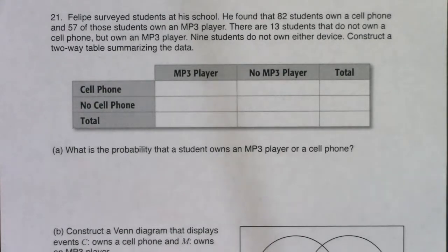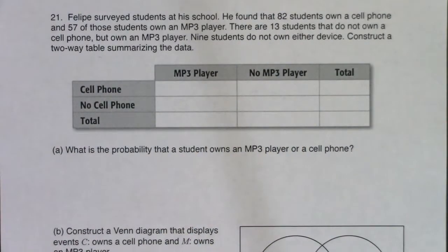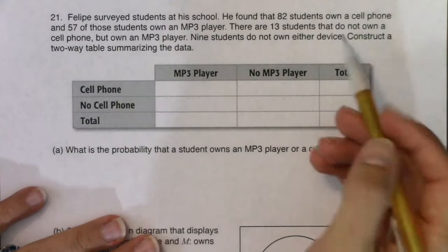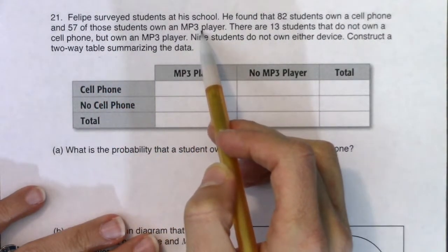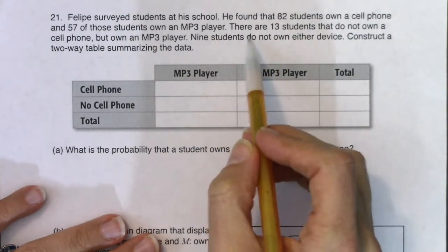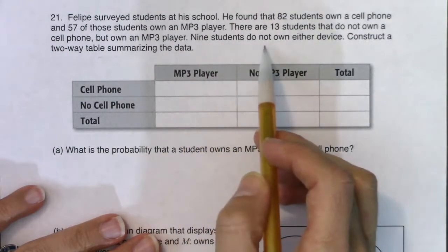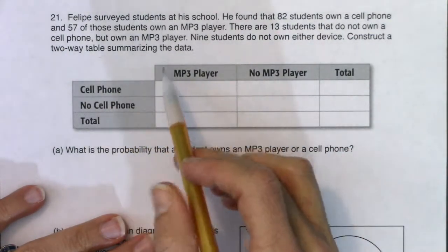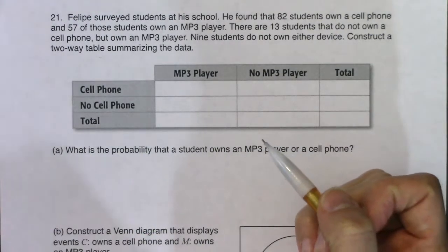Let's take a look at number 21. Right away it looks like we're going to have a table problem. Felipe surveyed students at his school. He found that 82 students own a cell phone, and 57 of those students own an MP3 player. There are 13 students that do not own a cell phone but own an MP3 player. Nine students do not own either device. Construct a two-way table that summarizes this data.